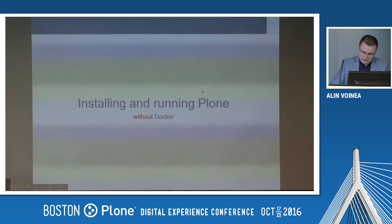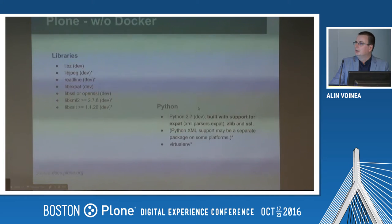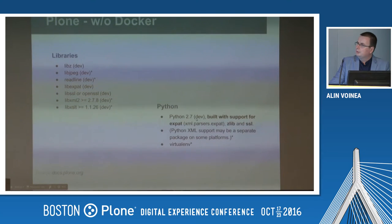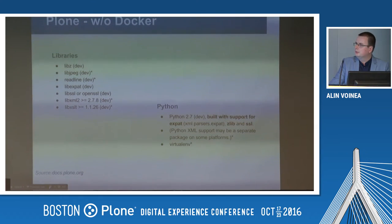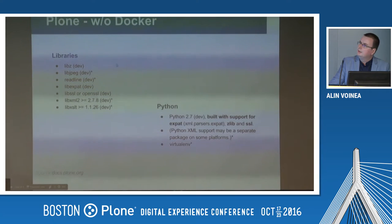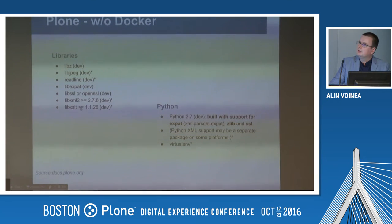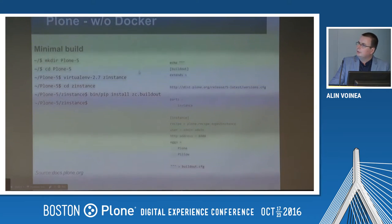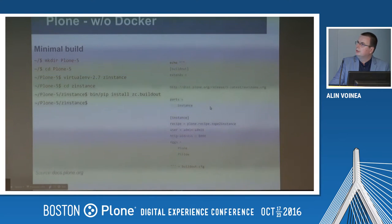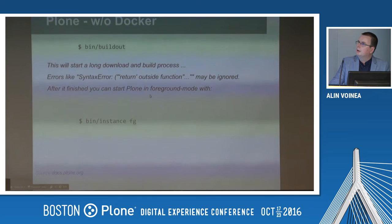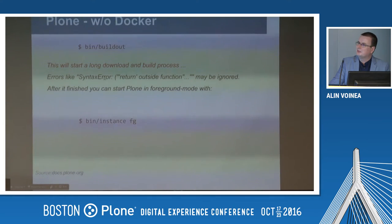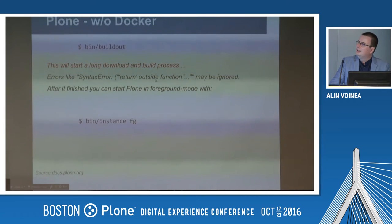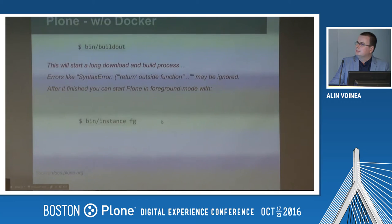So let's see how you install Plone without Docker. I took this from the Plone documentation: you have to install Python 2.7 with build support for expat and zlib, and then install all these libraries — which have different names on CentOS versus Debian. Then you have to install all these libraries, and then run it. This will take way too long and may give you syntax errors.